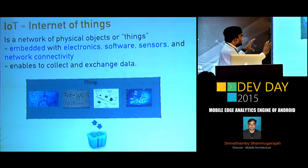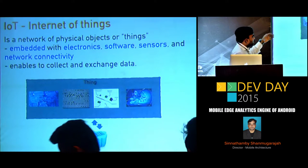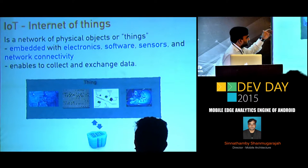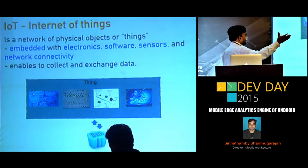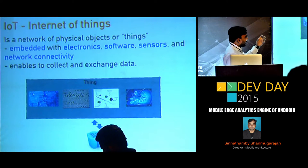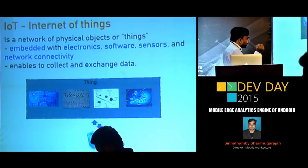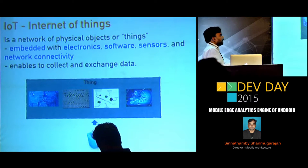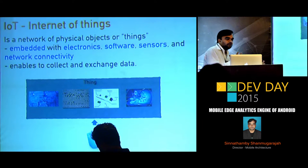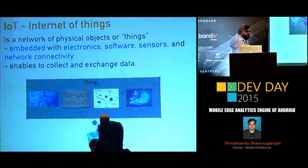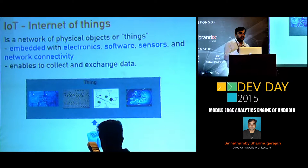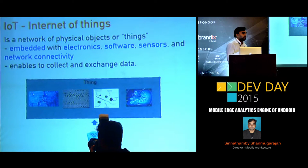IoT is basically a thing which has electronics, some kind of software, some sensors, and network connectivity, which can send and collect data and do some kind of processing — either on the device or from the cloud — to drive business value.